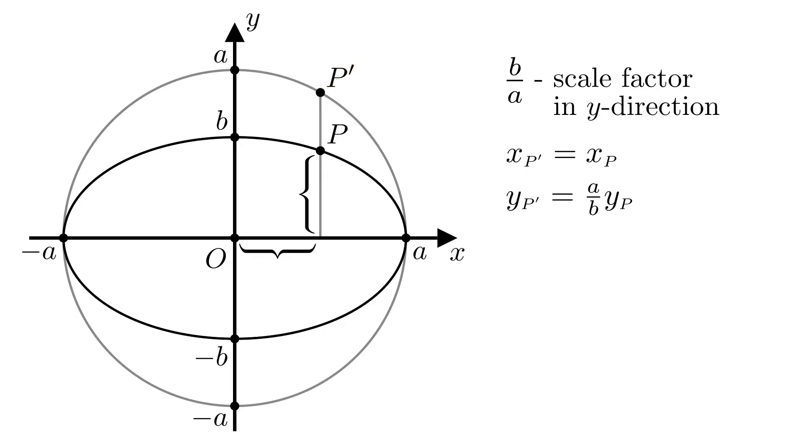P' is on the circle of radius a, which means that xP' squared plus yP' squared is equal to a squared.